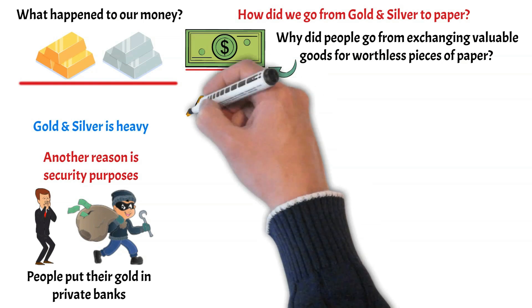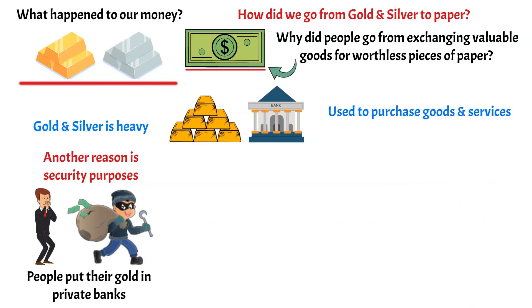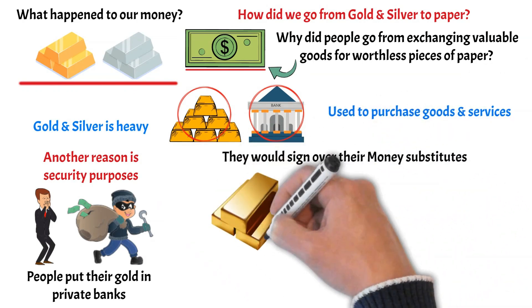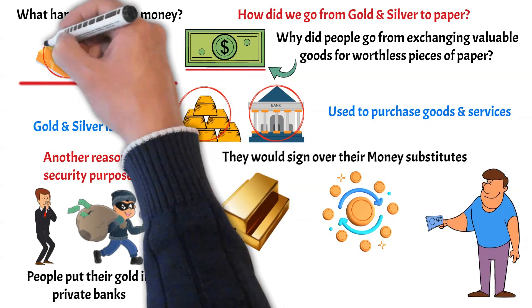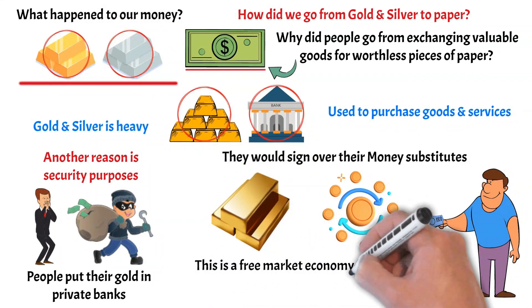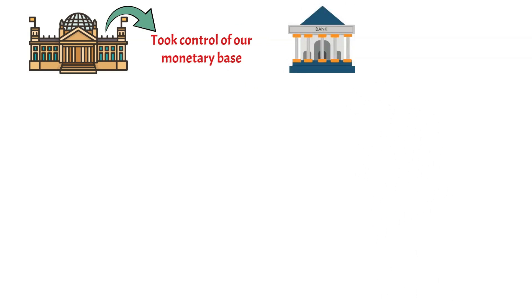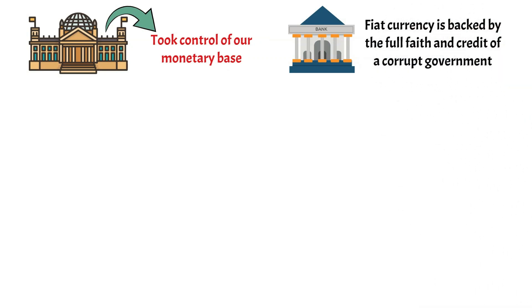These money substitutes, which were claims to units of gold stored in private banks, could be used to purchase goods and services. Instead of going to the bank to get gold and then buying everything using money proper, people started paying with money substitutes for convenience. The receiver of the money substitute then owned the agreed upon amount of gold or silver. This was a free market economy absent the interference of government. But the government eventually took control of our monetary base, and central banks practically monopolized the banking industry. Money substitutes were replaced with fiat currency, backed by the full faith and credit of a corrupt government.